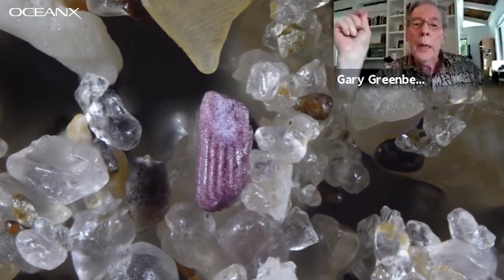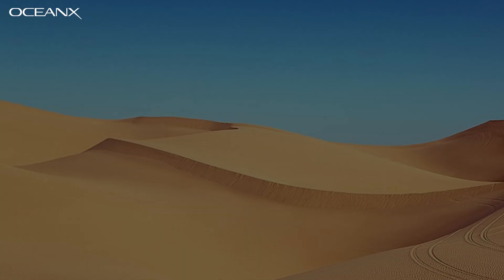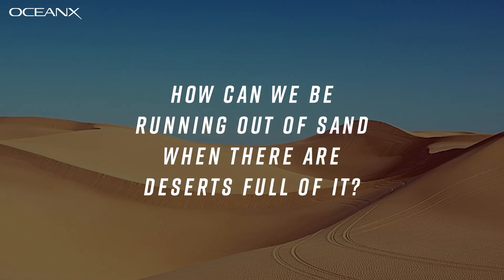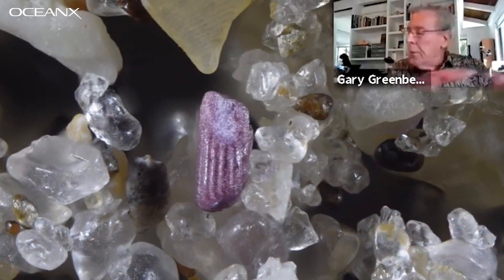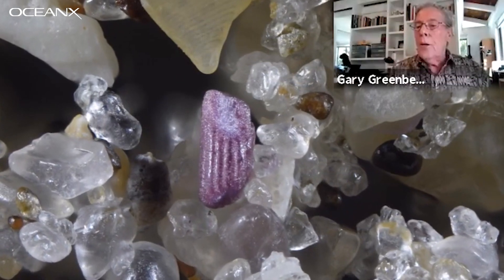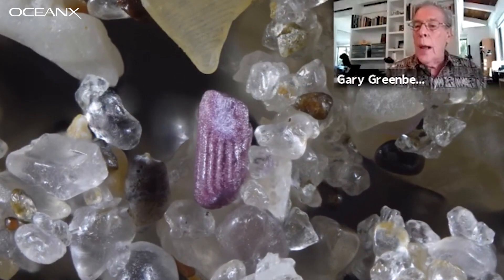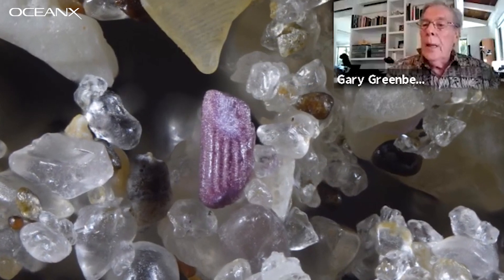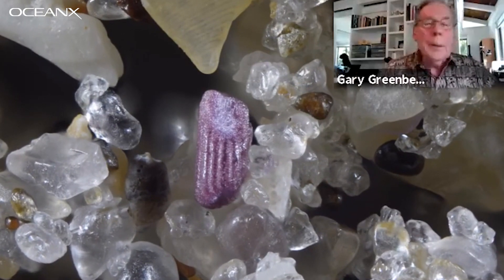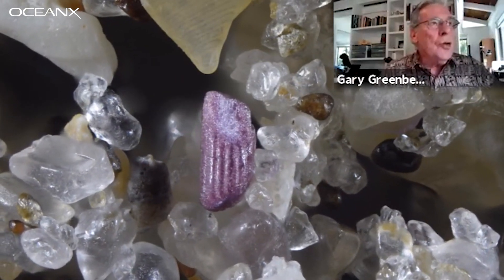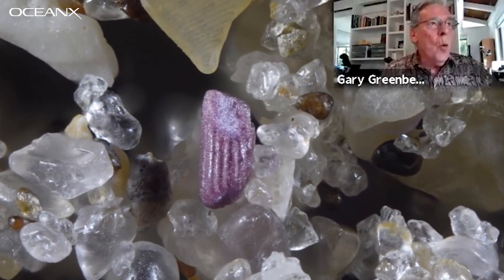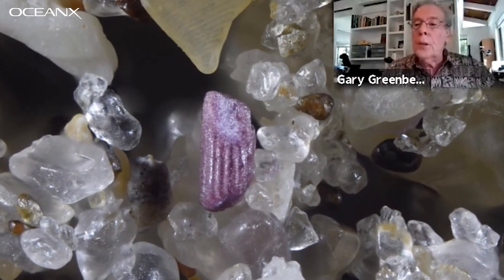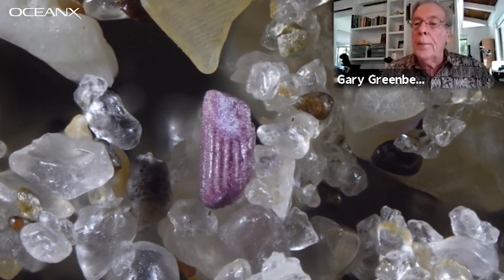And it's becoming a dwindling resource. All the desert sand is quartz crystal, but it's highly eroded — it doesn't have the sharp edges anymore. For construction sand, you don't want them totally round; you want some sharpness and jaggedness to them.